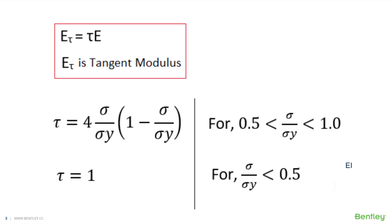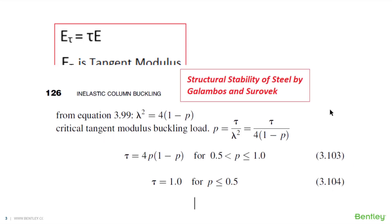Once a portion reaches the yield limit it loses axial stiffness, and the remaining portion has to bear the total force. Again some portion of the unyielded section starts yielding — this inelastic deformation starts from the extreme flange tips. So the load versus axial deformation pattern is not linear; it is material non-linear due to inelasticity. These yielded portions have insignificant E value, and this starts when stress reaches almost 50% of the yield stress limit, as assumed in the AISC code.